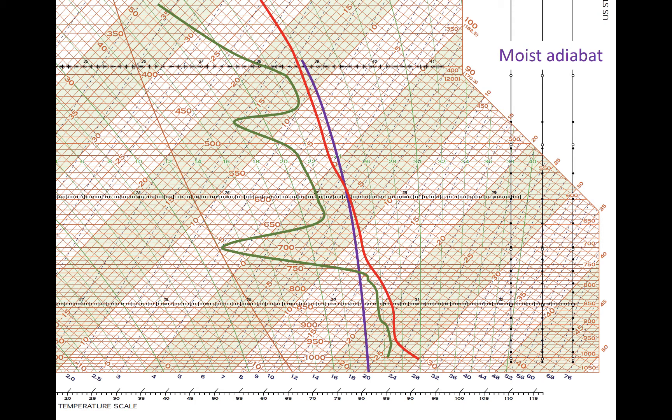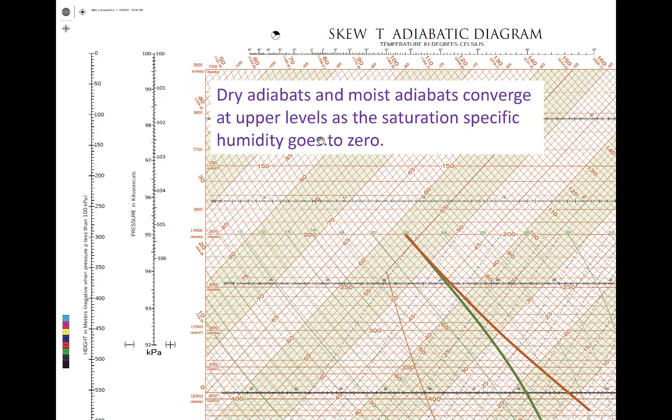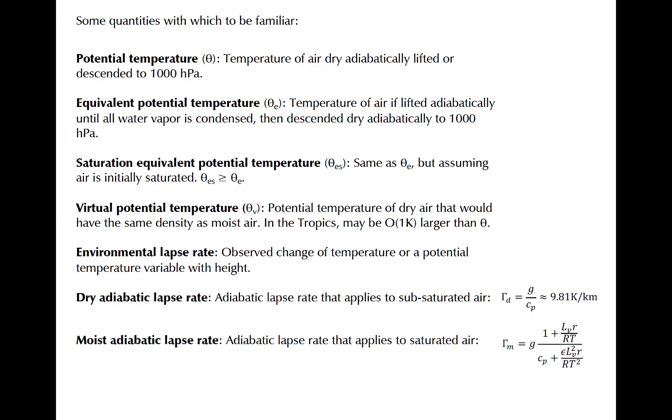The purple line now represents a moist adiabat, or a line of constant equivalent potential temperature. They are labeled by the wet bulb potential temperature associated with each adiabat. The slope of the red temperature lines relative to the adiabats helps quickly determine the static stability of an observed profile in layers of interest. At high altitude, the moist and dry adiabats converge eventually as the temperature lowers and the saturation specific humidity goes to zero.